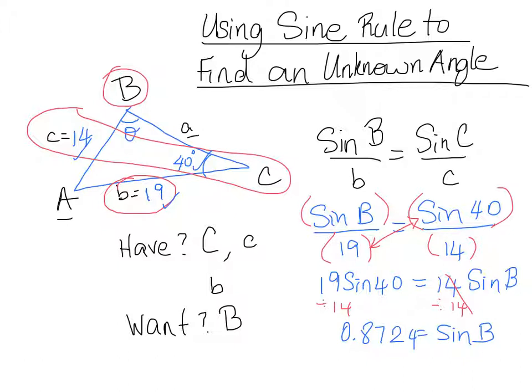Now, at this point, we want to get rid of our sine. Right now, we know that sine B is that value, so in order to figure out what B is, we have to do the opposite of sine. So, we're doing inverse sine to both sides. And when you do inverse sine in your calculator, the buttons are 2nd sine 0.8724, and we should get that the inverse sine of that value, 0.8724, is equal to 60.7 degrees. So, our angle B is approximately equal to 60.7 degrees.